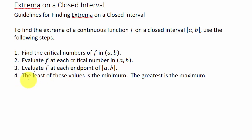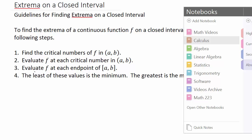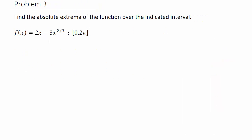We see what values we get, and the least of these values is the minimum, the greatest is the maximum. So let's take a look at our third example.